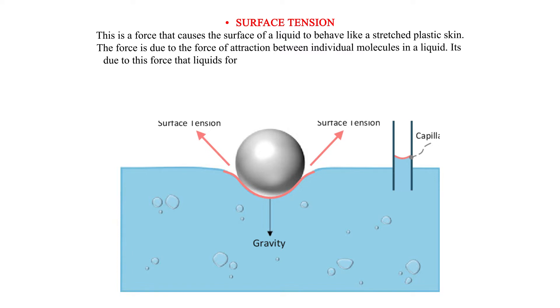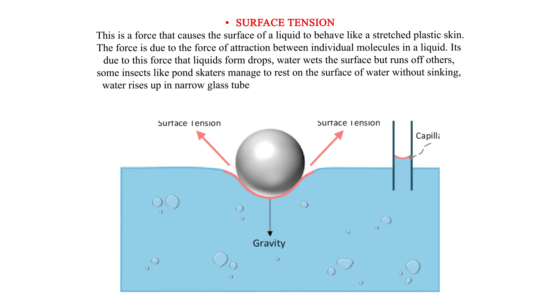It's due to this force that liquids form drops, water wets some surfaces but runs off others, some insects like pond skaters manage to rest on the surface of water without sinking, water rises up in narrow glass tubes but mercury is pushed down to a lower level in the same tube, and steel needles or razor blades float on water even though steel is denser than water.